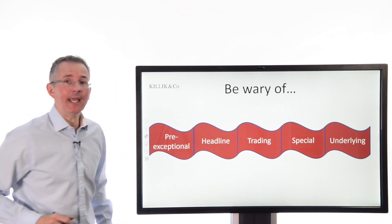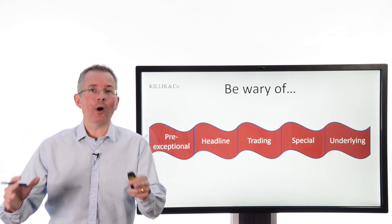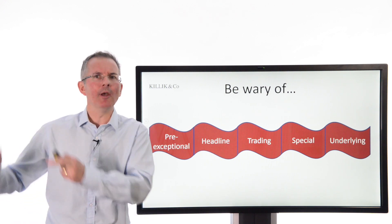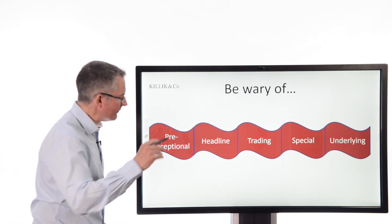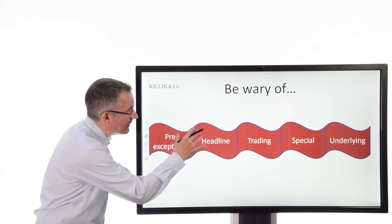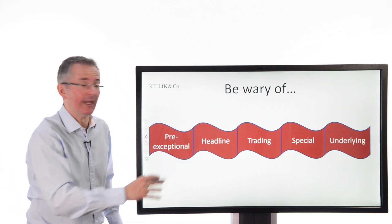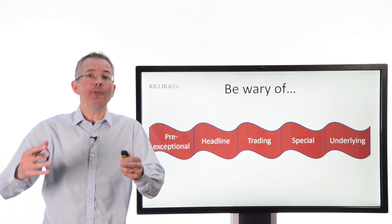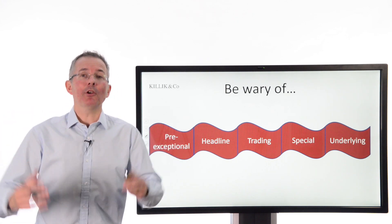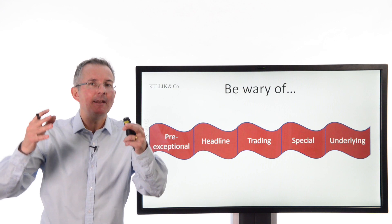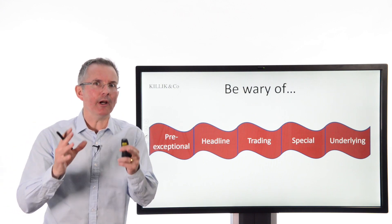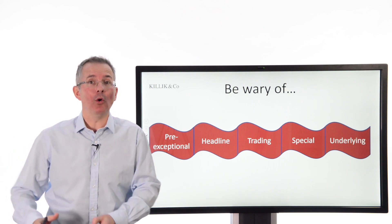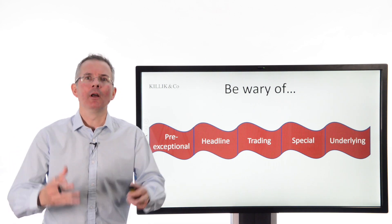And these come under lots of different names. None of them are required to be prepared by law. So this is the director saying we're not happy with the way the law does it, we want to do it our own way. Pre-exceptional is one example, headline, trading, I've seen all of these, special profit, underlying. These are terms the directors have essentially made up because they want to present a picture and they don't want to do it within the existing framework exactly. And there's nothing to stop a company by the way doing the minimum required by the law and then adding its own version as an extra.